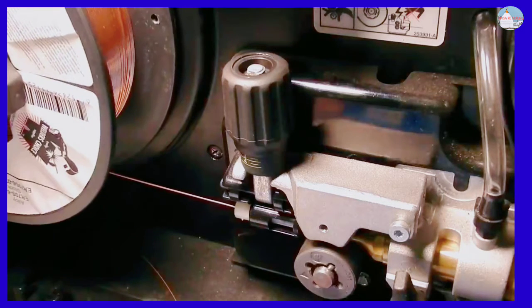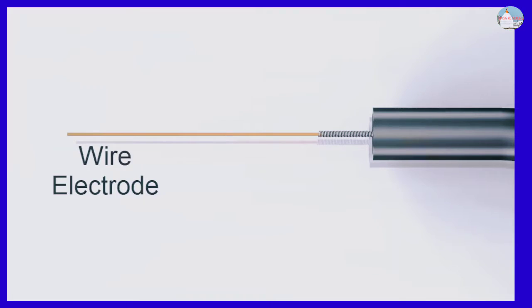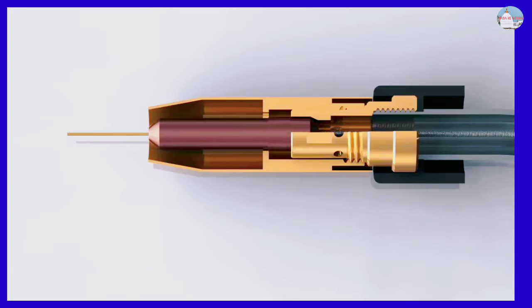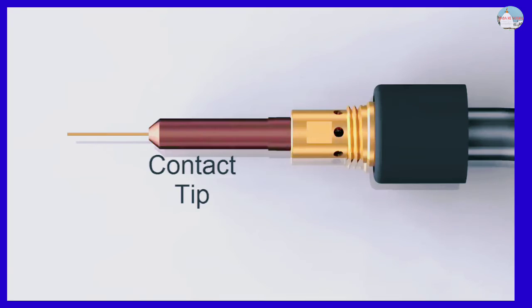Here's the MIG wire going through the wire feeder into a flexible tube or conduit liner. The liner goes through the hose or welding lead all the way to the torch nozzle. At the nozzle, the wire is fed through a contact tip and comes out at the point of the weld.